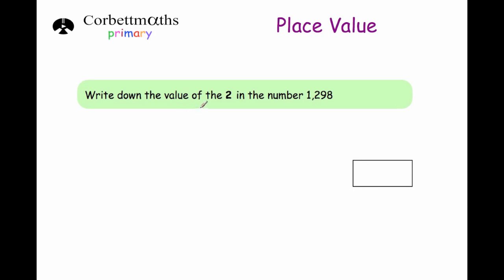The next question says: write down the value of the digit 2 in the number 1,298. We've got thousands, hundreds, tens and units. The 2 is in the hundreds column, so it's two hundreds. So we're going to write down 200.